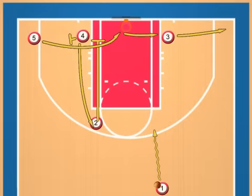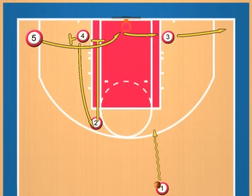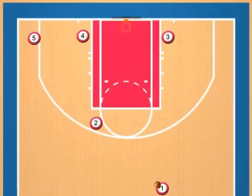As usual, the point guard brings the ball up the court to the right side of the circle. As he does this, number four sets a screen for number five, who cuts across the key looking for a pass and a layup. If he is not open, he moves across the lane and takes the low post spot, which number three has vacated.